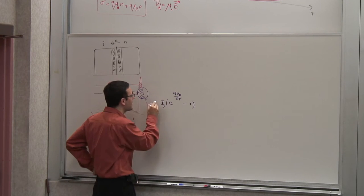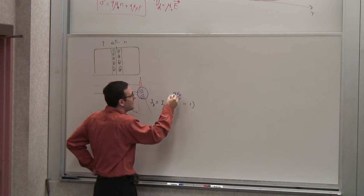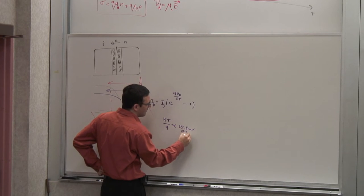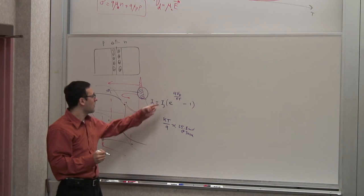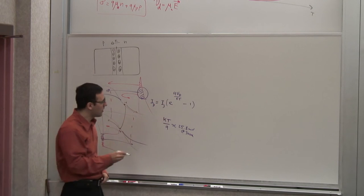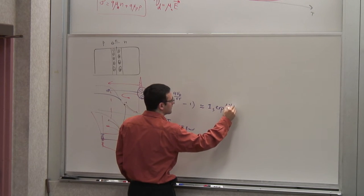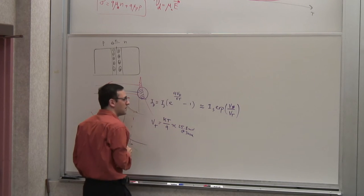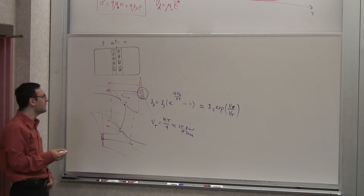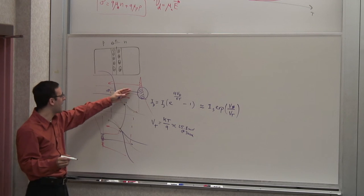This current is proportional to exp(q·VD / kT) minus one, and the minus one came from having to compensate for the return generation current. The proportionality constant is what we call IS. For most typical situations, since kT/q is about 25.8 millivolts at 300 Kelvin — quite small — for a typical diode voltage this is e to some large number, so the minus one doesn't really matter, and for most practical purposes the diode current is simply IS·exp(VD/VT).